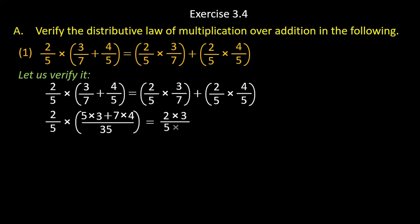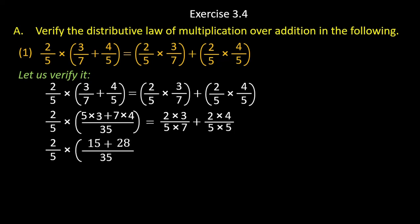2 upon 5 into — now 5 multiply 3 you will get 15, plus 7 multiply 4 you will get 28. Bracket close. Now 2 multiply 3 you will get 6, 5 multiply 7 you will get 35, plus 5 multiply 5 you will get 25. 2 upon 5 will be the same. Now 15 plus 28 will be 43, and 35 — LCM will be the same on the other side.